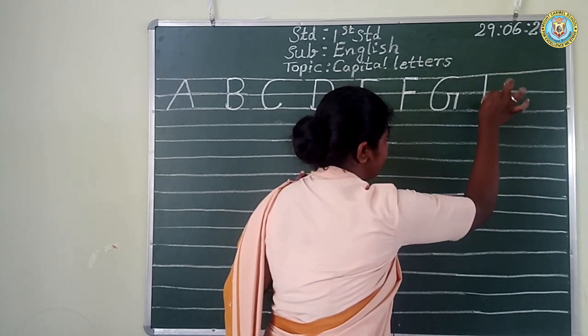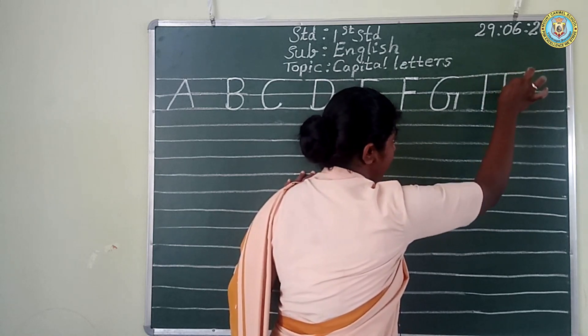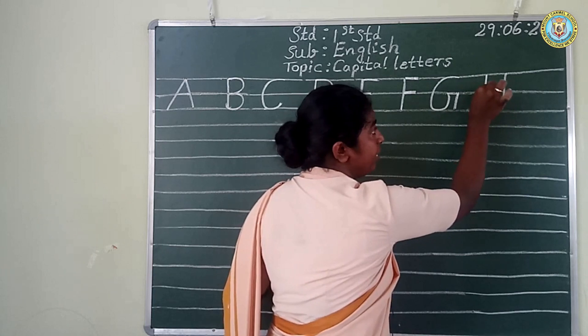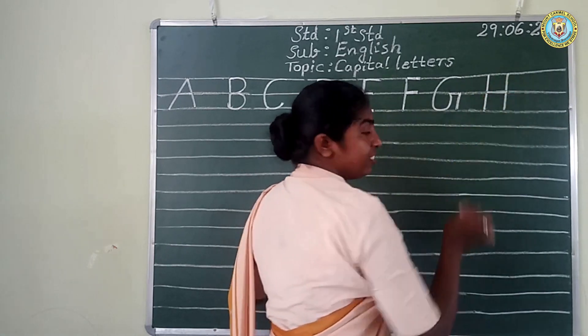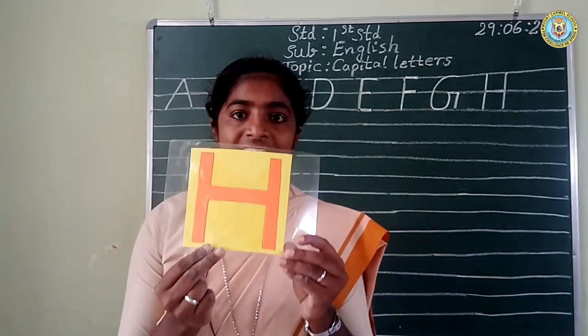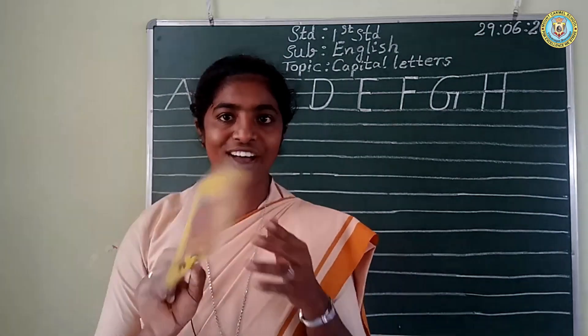Next letter. The straight line and another straight line and the sleeping line in the middle. H. H for hen. H for hen. Look at the hen, children. Have you all seen hens around your houses? Yes, we have all seen them near our houses.